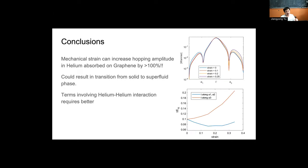What are we seeing here? First of all, we can see that mechanical strain can increase the hopping amplitude of helium absorbed on graphene by as much as 100 percent. This is great news, as if we start in the solid phase, we have a great chance of getting out of it into the superfluid phase. However,